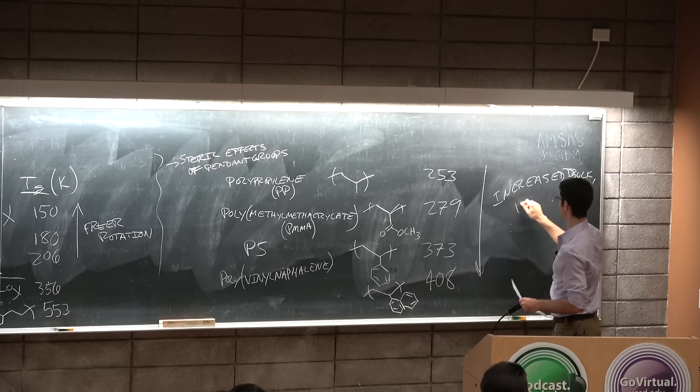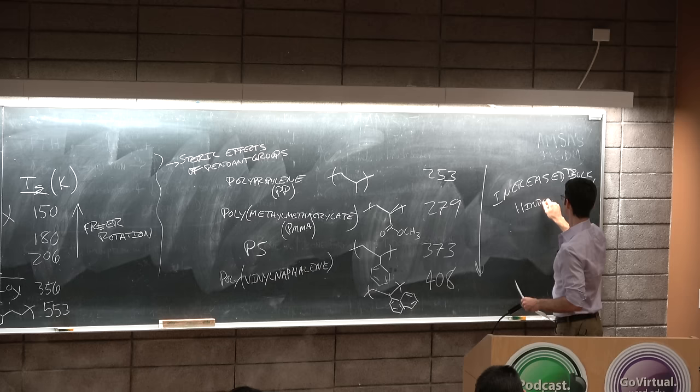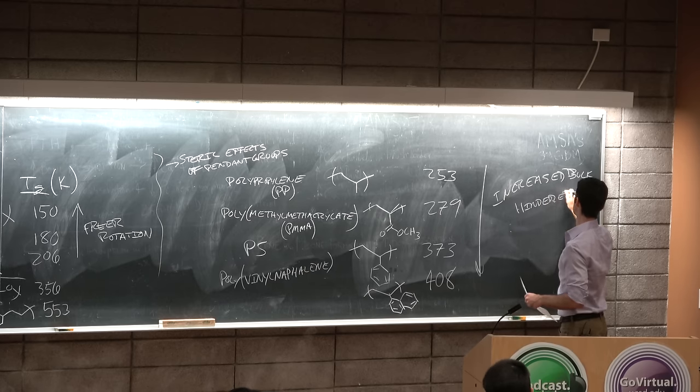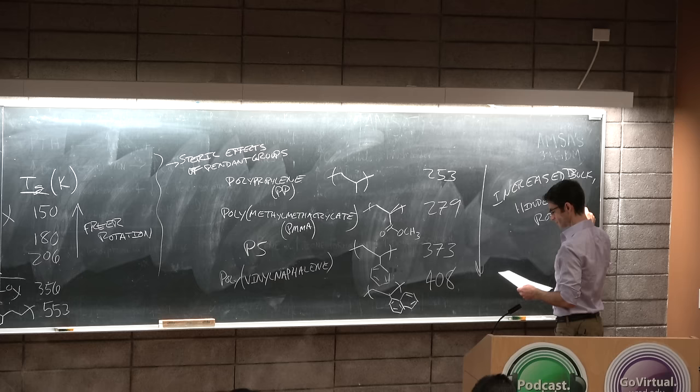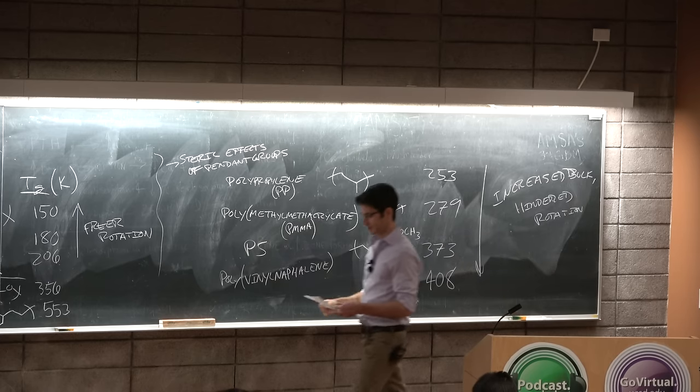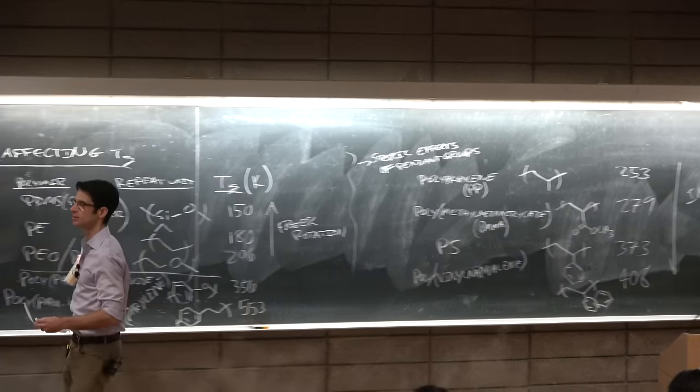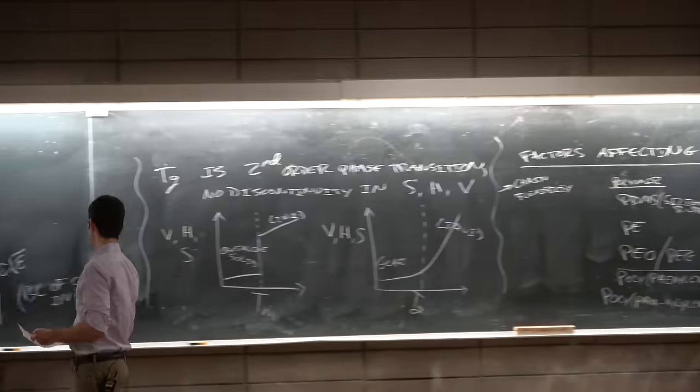So this is the naphthalene unit. Naphthalene is famous as mothballs. Probably don't want to use mothballs because naphthalene causes cancer. And it's 408. So this is increased bulk and hindered rotation.